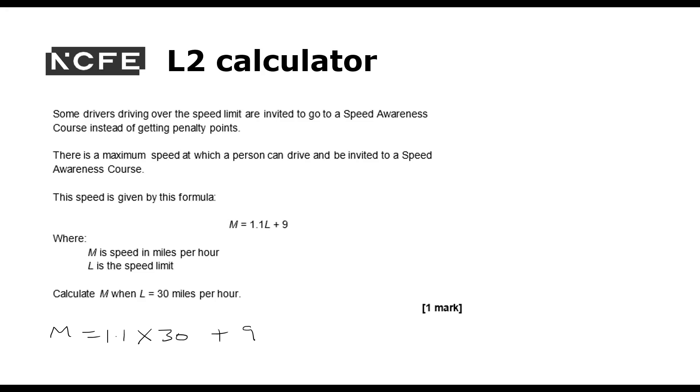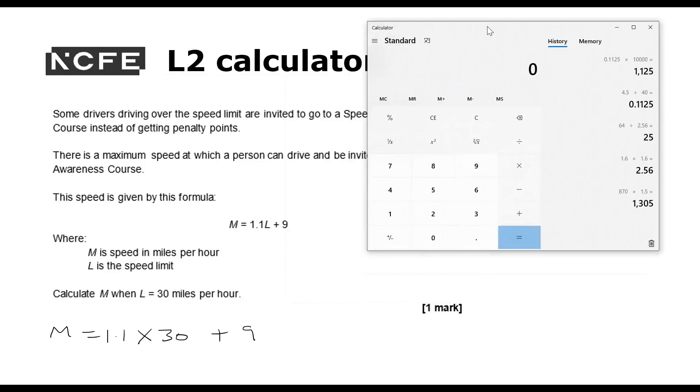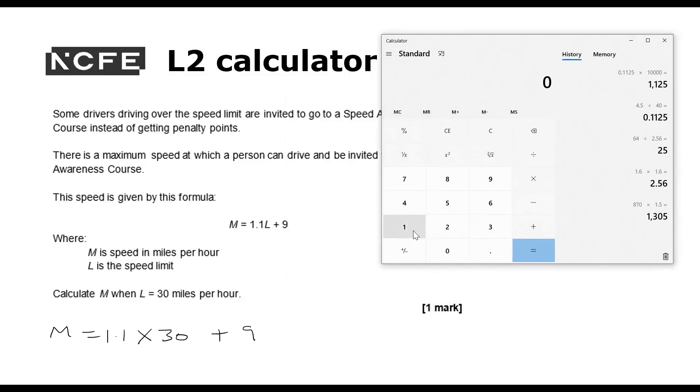So we've got M equals 1.1 times 30 plus 9. So 1.1 times 30, I can get my calculator out again. And I can do 1.1 times 30 equals 33 plus 9 equals 42.